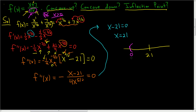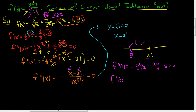Let's pick a number between zero and twenty-one, like one. f double prime of one: we get negative times (1 minus 21) over four times one to the five-halves. That's negative times negative twenty over four, which equals positive five — it's positive, so we know it's concave up there. Let's pick a number bigger than twenty-one. Evaluating gives a result less than zero, so we know it's concave down there.